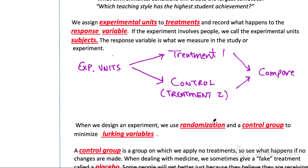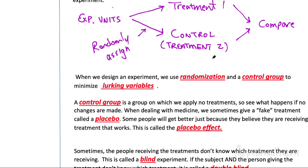When we design an experiment, we use randomization and a control group to minimize lurking variables. You have to randomly assign experimental units to each treatment — we use our calculator to do that. Why randomly assign? Because it gets rid of lurking variables and adds more control. The control group is a group in which we apply no treatment whatsoever, so we can see what happens when no changes are made. When dealing with medicine, we sometimes give a fake treatment called a placebo as the control. A placebo pill is a fake pill — just sugar or something with no effect. We do this because many people get better simply because they believe they're receiving a treatment that works.